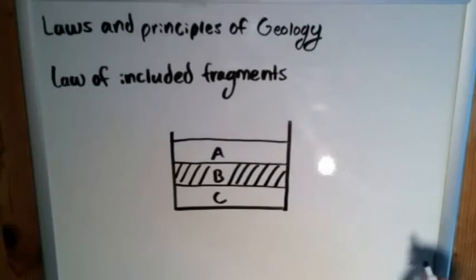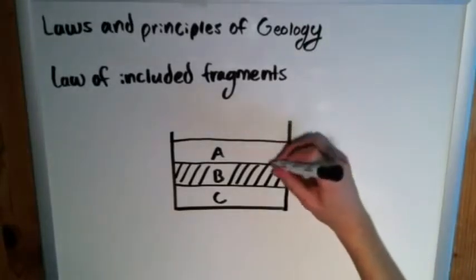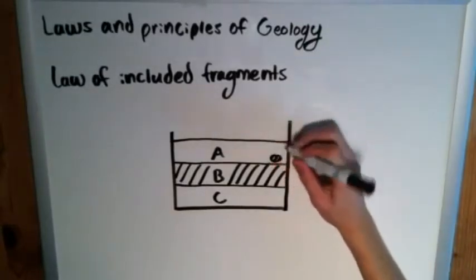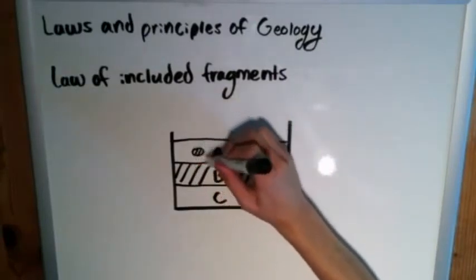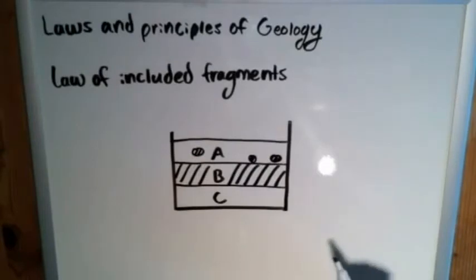The law of included fragments states that if you see something like this where you've got little fragments of B inside of A, and this view is incredibly simple. I mean, we wouldn't even need this law, we could just say by the law of superposition that B is older than A.